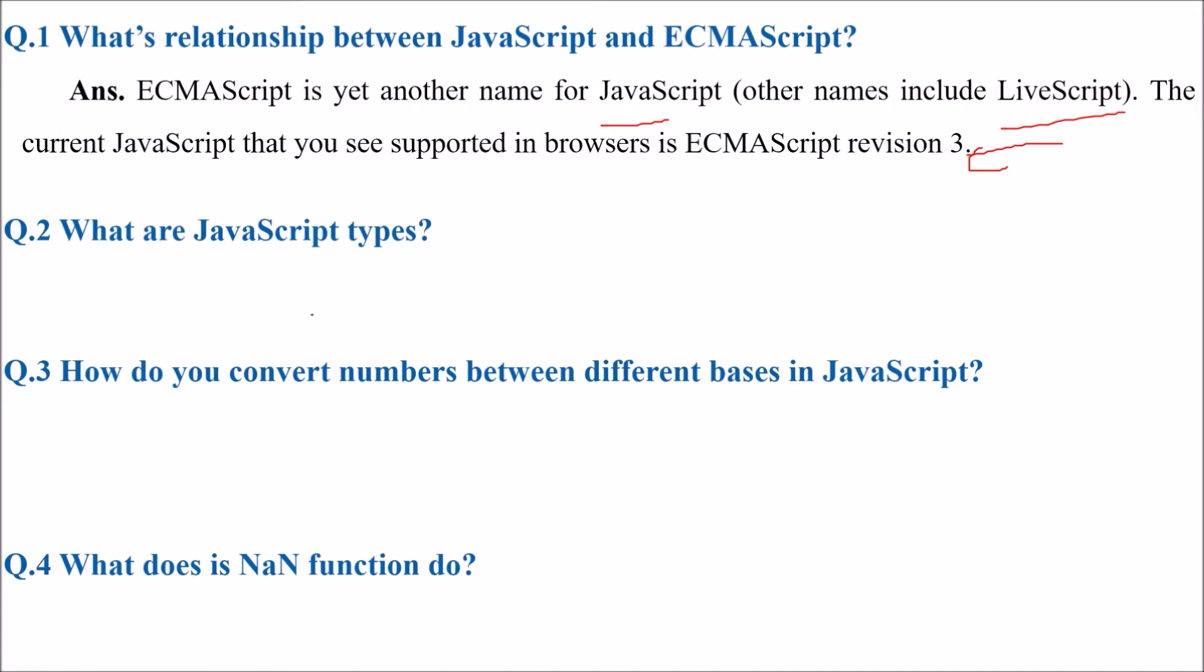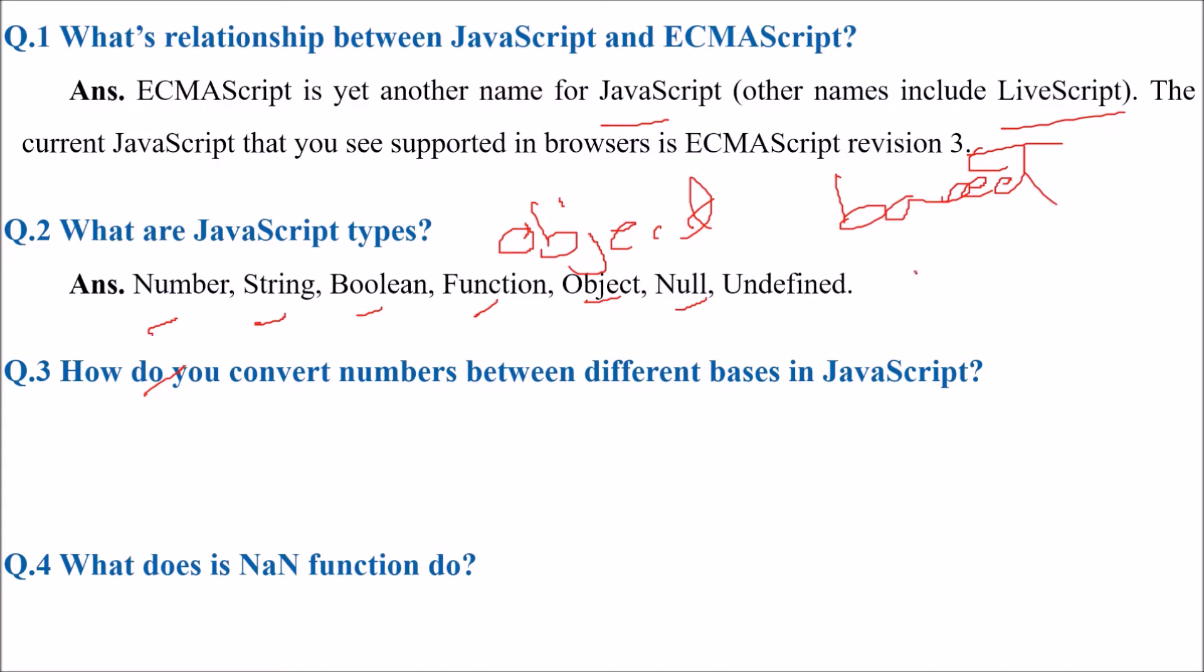What are JavaScript types? We have number, string, boolean, function, object, null, undefined. These are all JavaScript types. Please understand that JavaScript is an object-based language. Everything is object here.